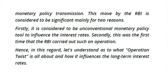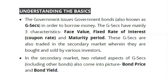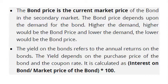Understanding the basics: the government issues government bonds known as government securities or G-Secs in order to borrow money. These G-Secs have mainly three characteristics: face value, fixed interest rate (coupon rate), and maturity period. G-Secs are also traded in the secondary market where they are bought and sold by various investors. In the secondary market, two related aspects come into picture: bond price and bond yield.